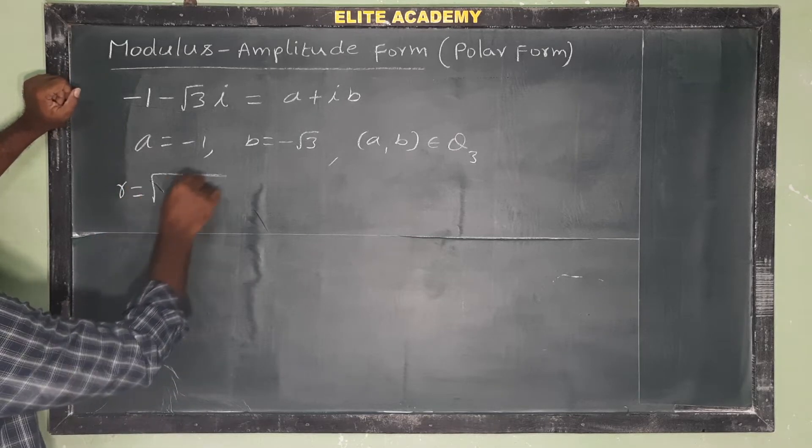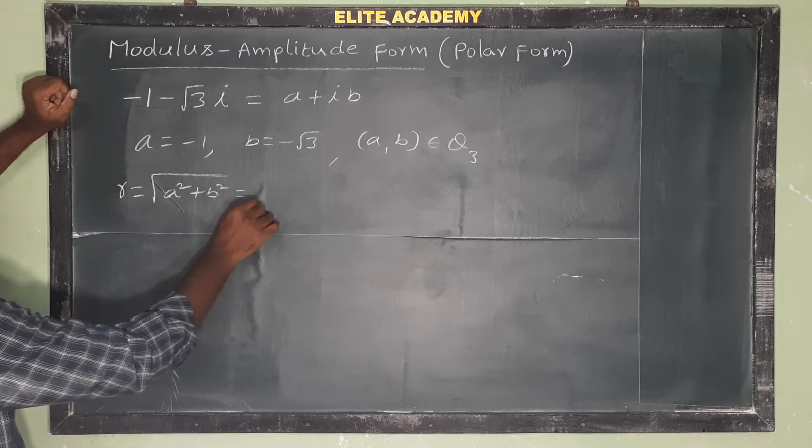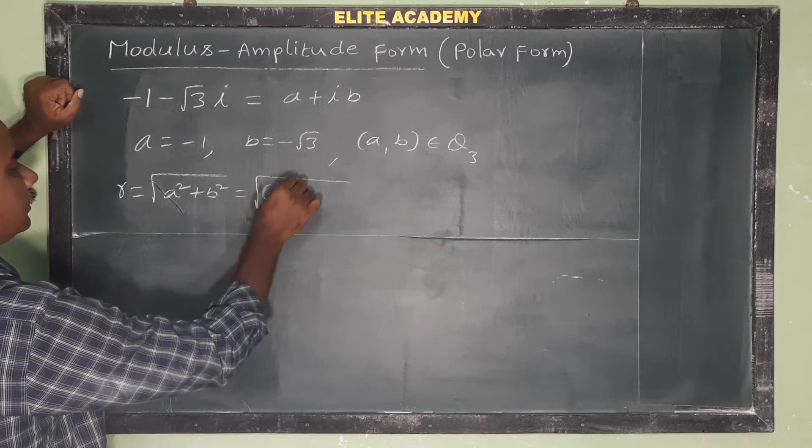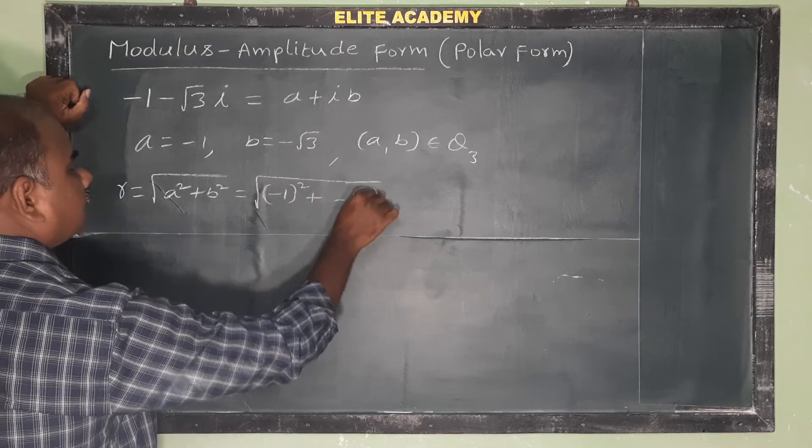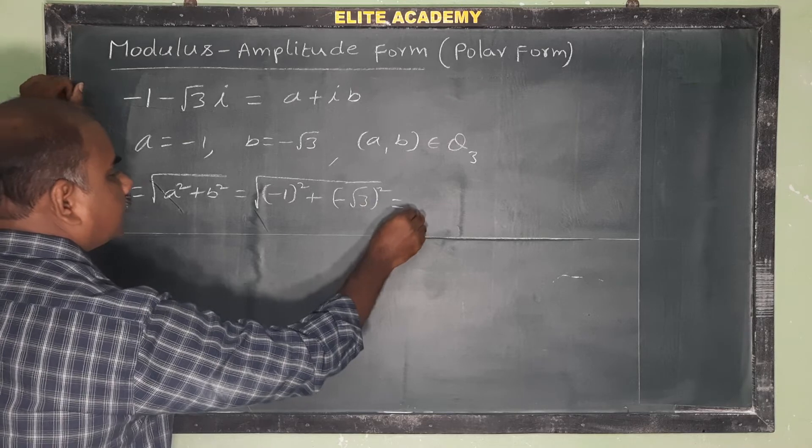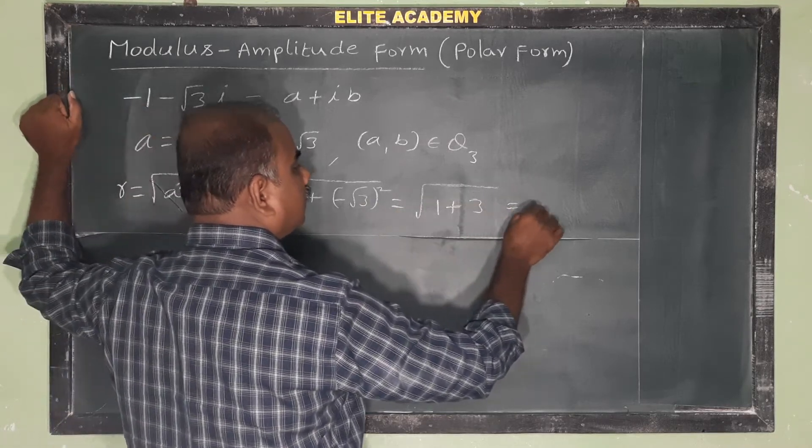r = √(a² + b²). a² means (-1)², b² means (-√3)². So (-1)² = 1, (-√3)² = 3, giving √4 = 2.